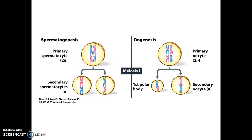Those primary cells will undergo the first division of meiosis, known as meiosis I. In spermatogenesis, the primary spermatocyte becomes two evenly divided secondary spermatocytes, with the number of chromosomes cut in half, going from a diploid cell to haploid cells. In oogenesis, there is an even division of the genetic material during meiosis I, but a very uneven division of the cytoplasm — in fact, the difference is even greater than shown in diagrams. The secondary oocyte can be thousands of times larger than that first polar body, which plays no further role in development.